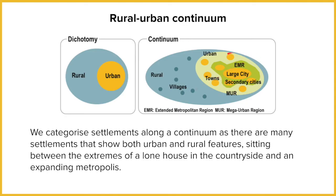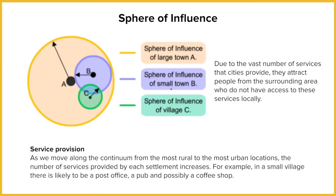Each of these settlements is going to have what's called a sphere of influence — that's the ability to attract people to visit or come to that location. Larger cities are going to have a much larger sphere of influence, and small villages and hamlets are going to have a much smaller one. Looking at a sphere of influence diagram, we've got three different settlements: C, B, and A. We're going to put these in a local context to make it easier to understand.